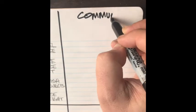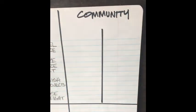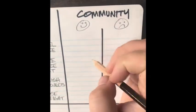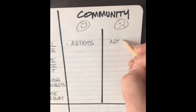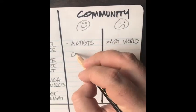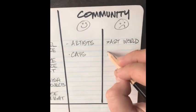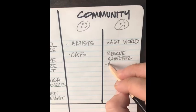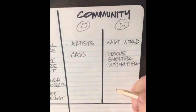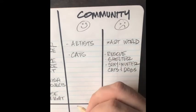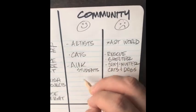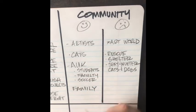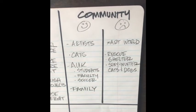Next I'm going to make another quadrant and say 'community,' with a line down the middle, and talk about things I love about my community — the people, the neighborhood, the groups you belong to, teams. I love artists, but the art world can be a little tricky and frustrating. I love cats. I wish my community would shelter and spay and neuter cats and dogs more. I love my community as far as AUK is concerned — the students, the faculty, playing soccer with the faculty — and I love my wife and her family.